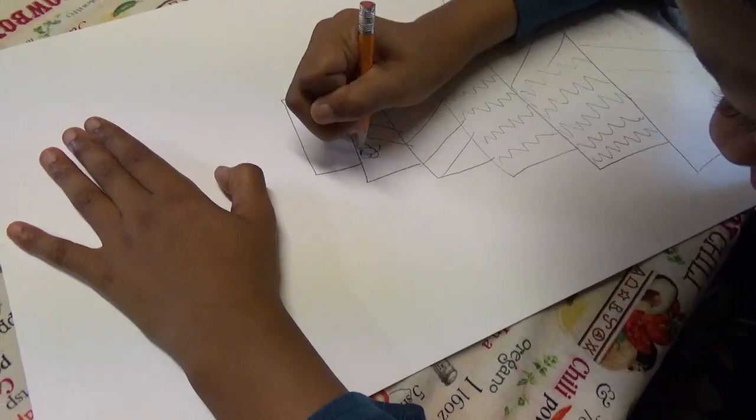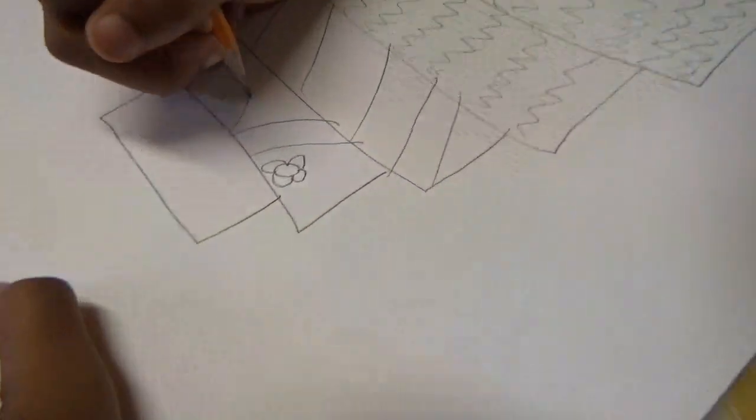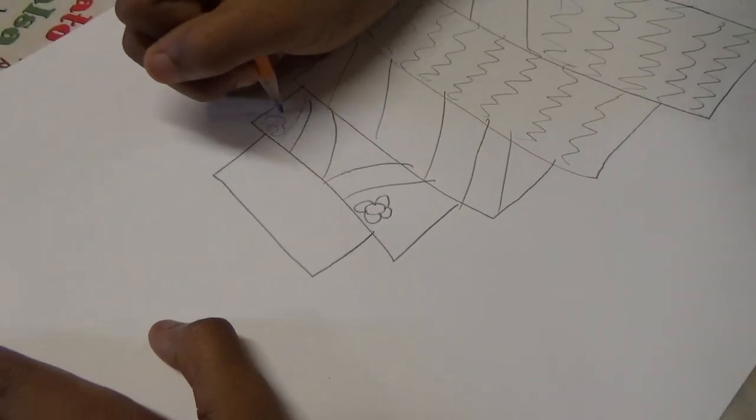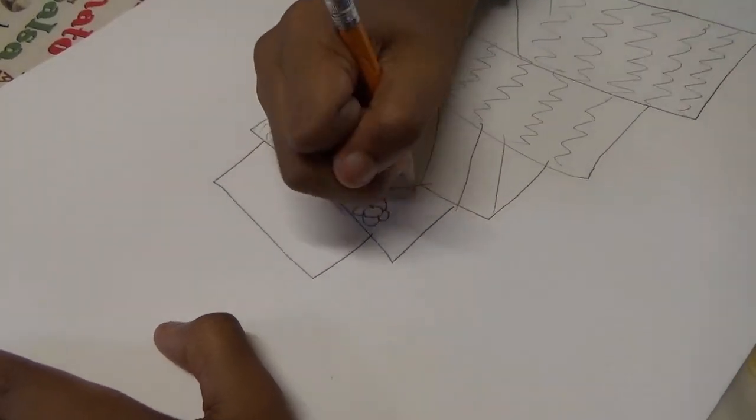I'm going to draw a pretty flower and another flower. Let's draw some curly lines like some curtains.